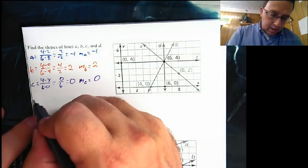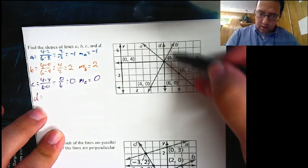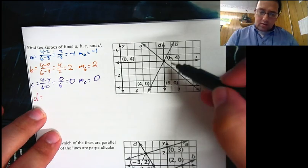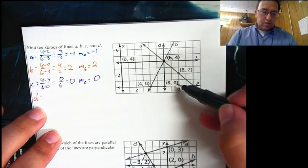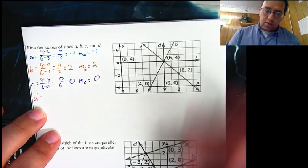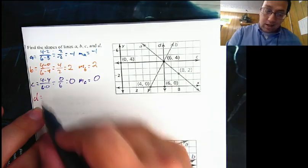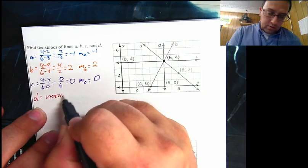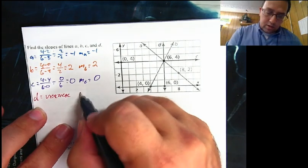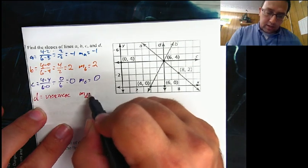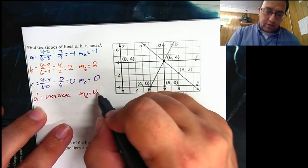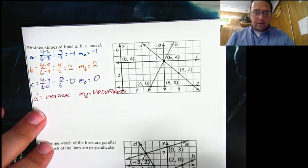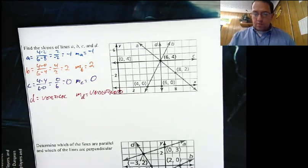Last one — line D. And that's a vertical line. I'd have 4 minus 0, which is 4, over 6 minus 6, which is 0. So I'd have 4 divided by 0, which you can't do. This is vertical, so the slope of line D is undefined.